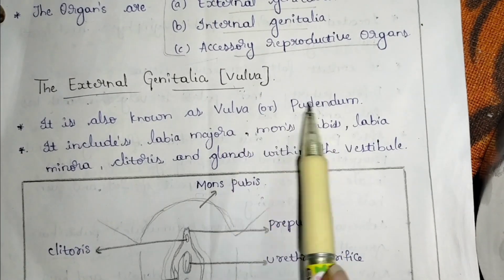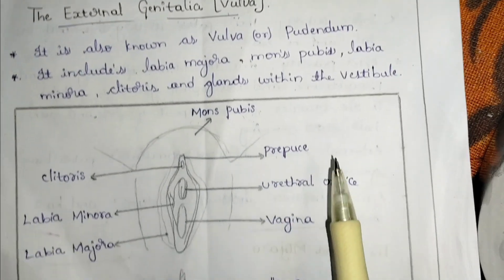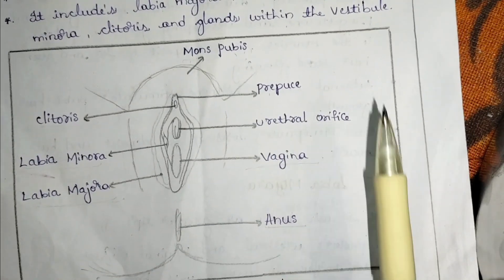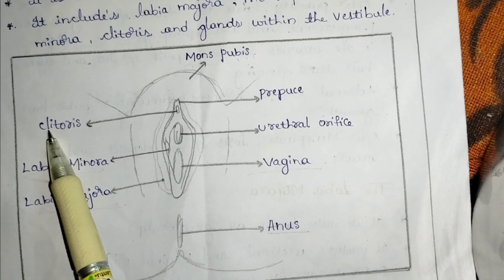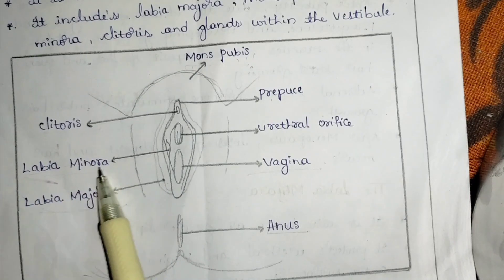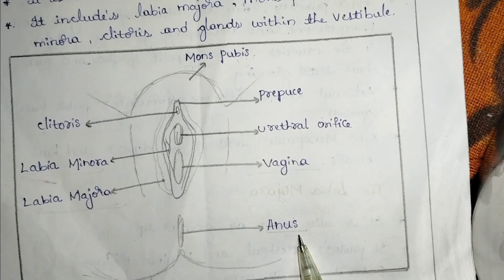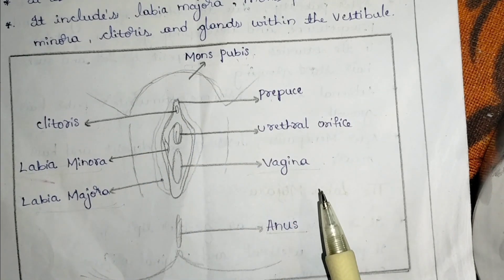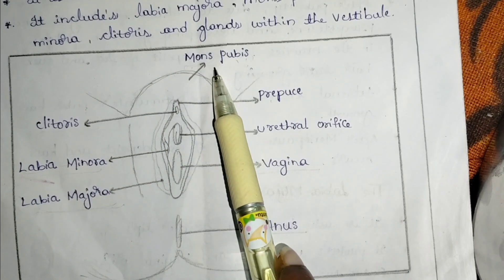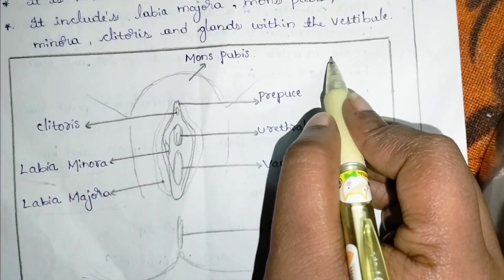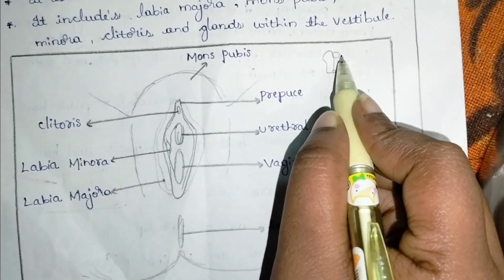First is external genitalia. External genitalia is also known as vulva or pudendum — these are two other names for external genitalia. The organs included in external genitalia are: mons pubis, clitoris, labia minora, labia majora, and vagina.